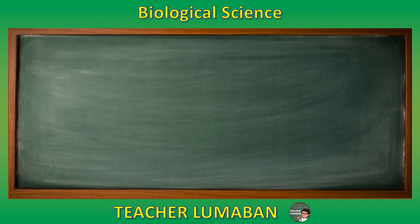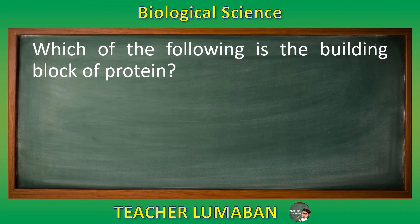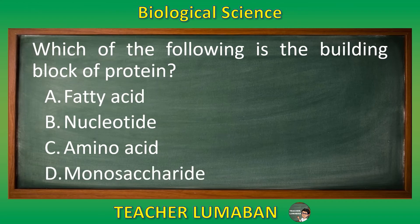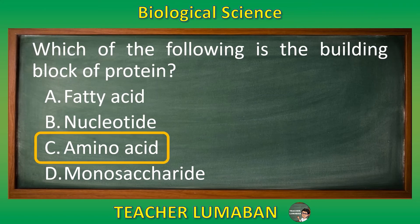Which of the following is the building block of protein? Letter A: Fatty acid. Letter B: Nucleotide. Letter C: Amino acid. Letter D: Monosaccharide. The correct answer is letter C — amino acid. Amino acid is the building block of protein.